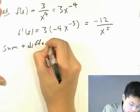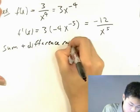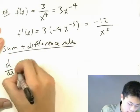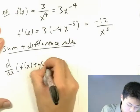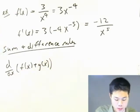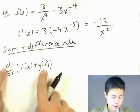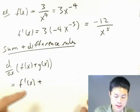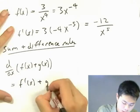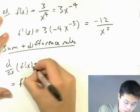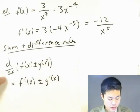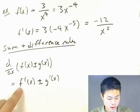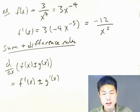One last thing: sum and difference rules. If you're taking the derivative of two functions added or subtracted together, it's simply equal to the sum or difference of their individual derivatives. So d over dx of f of x plus or minus g of x equals f prime of x plus or minus g prime of x.